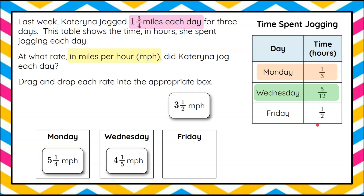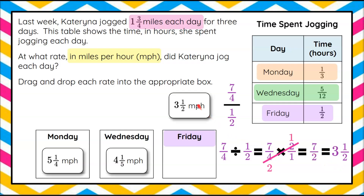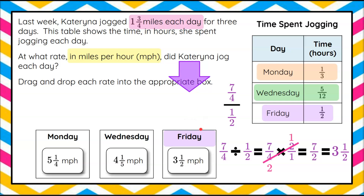Let's clear our space and talk about Friday. Even though there's only one left, we're going to check it to make sure we're one hundred percent correct. Our miles for the day was one and three-fourths, written as the improper fraction seven-fourths. The time spent jogging was one-half of an hour. So we write this as a division problem: seven-fourths divided by one-half. Multiplying by the reciprocal, seven-fourths times two over one — I see a common factor: two divided by two is one, four divided by two is two. Seven times one is seven, two times one is two — seven-halves. Two goes into seven three times with one left over, so three and a half miles per hour. Friday's rate is three and a half miles per hour.